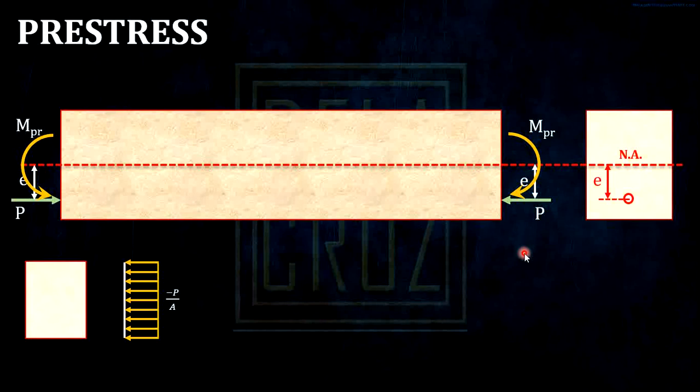Look at the direction of the moment. It will rotate like this and push the beam at the bottom. Therefore, the portion of the beam below the neutral axis will be in compression because you're pushing it. Above the neutral axis, the moment will pull it, so it will be in tension.